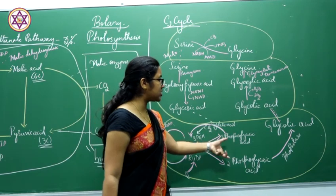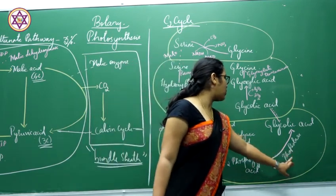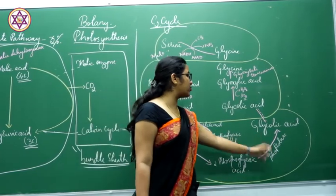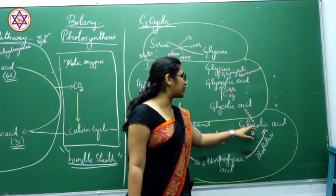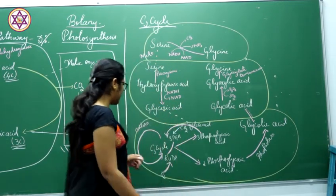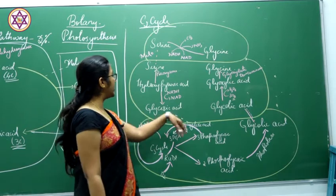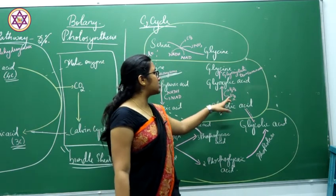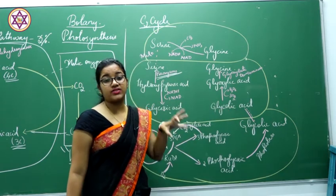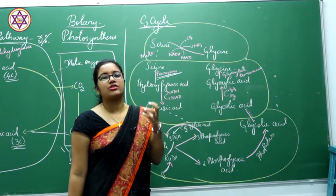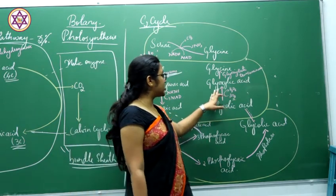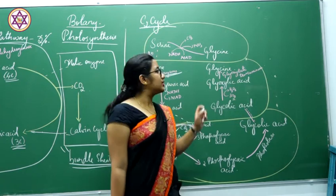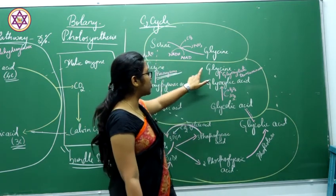When RuDP combines with oxygen, it produces 3 molecules of phosphoglyceric acid and 2 molecules of phosphoglycolic acid in the chloroplasts. Phosphatase removes the phosphate group, producing glycolic acid. This glycolic acid produced in the chloroplasts enters into the peroxisome, where oxygen is consumed, and glycolic acid is converted into glyoxylic acid. Glyoxylic acid is then converted into glycine.